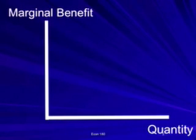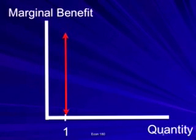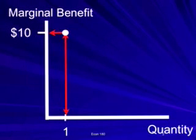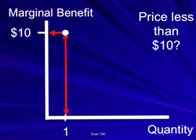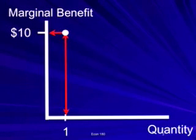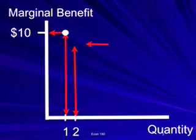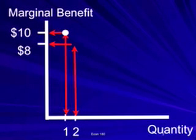Quantity demanded is on the horizontal axis, and marginal benefit, or willingness to consume, is on the vertical axis. Suppose the first consumer is willing to pay $10 for the product. The consumer will be willing to purchase this product for any price less than or equal to $10, but would not be willing to pay more than $10. Suppose the second consumer is willing to pay $8 for the product — the consumer will not purchase it for any price greater than $8.